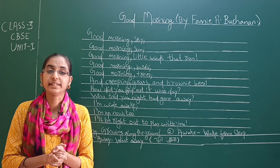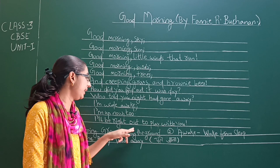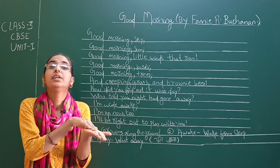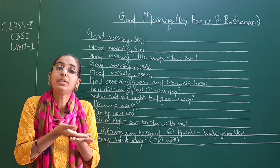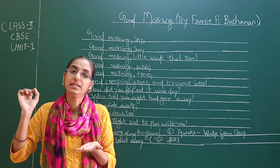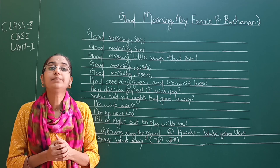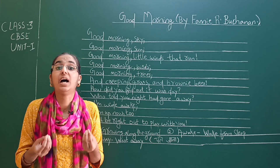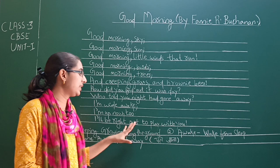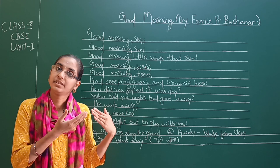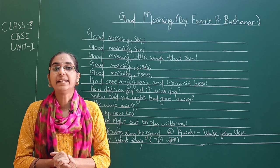Creeping — growing along the ground. Creeping का मतलब होता है ground level के साथ कुछ बढ़ना — growing along the ground. Awake — wake from sleep. Awake का मतलब होता है जागना या सोके उठना. Gone away — went away. Night has gone away मतलब रात जा चुकी है — gone away मतलब चले जाना.